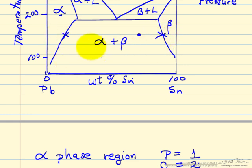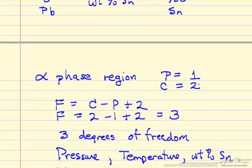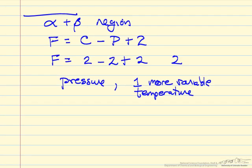But phase rule doesn't tell us anything about amounts. Phase rule is telling us about intensive variables. We can fix pressure and for example temperature, or pressure and concentration of a phase, and then everything is fixed. So the phase rule says we have two degrees of freedom in this region where there are two solid phases in equilibrium.